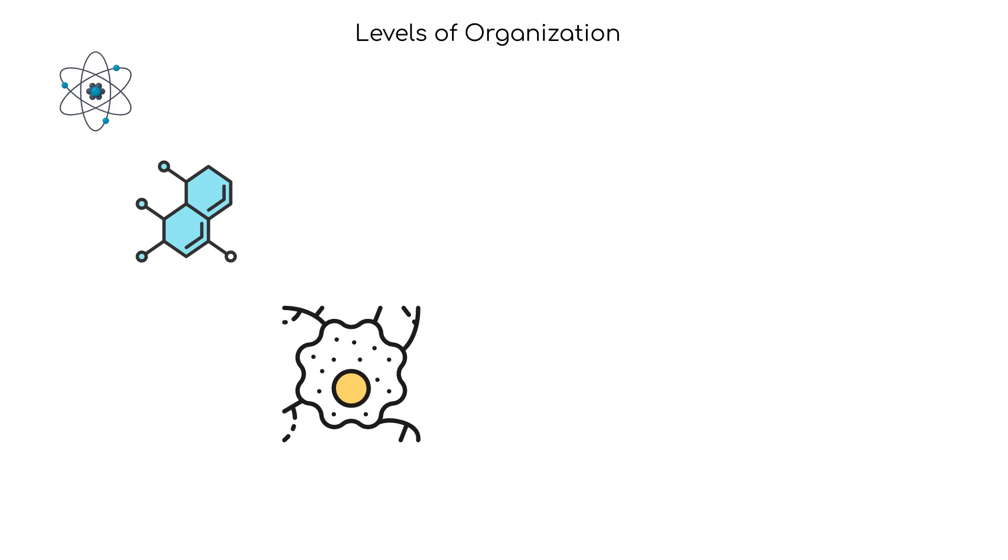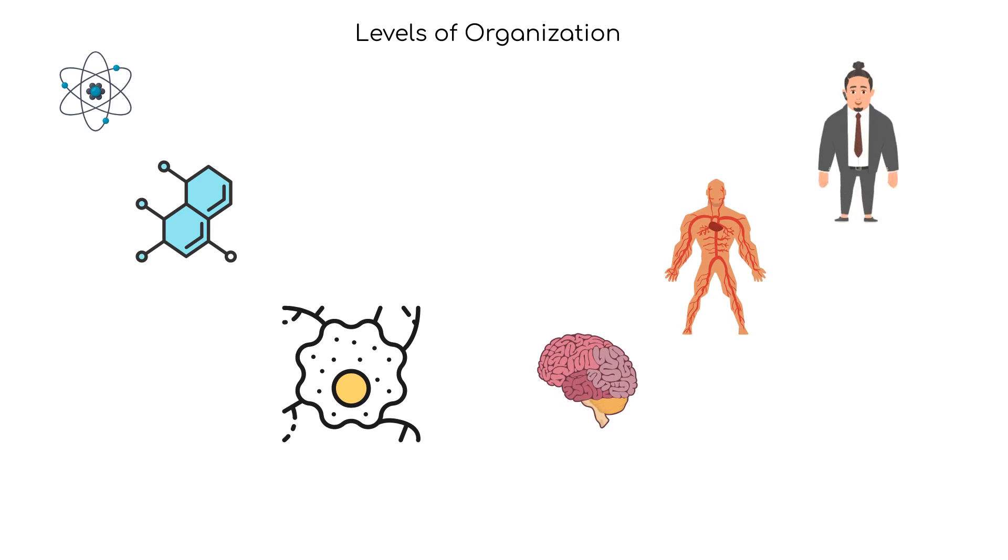The levels of organization are atom, molecule, cell, organ, organ system and organism, which is the highest level of organization.